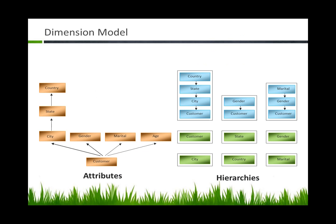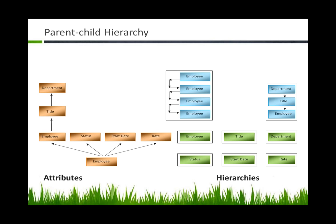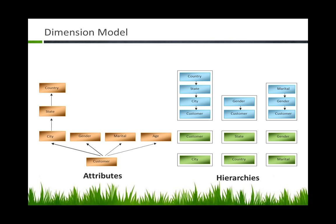Does anybody want to hazard a guess as to what the difference is between an attribute and a hierarchy? So the idea with exposing an attribute and building a hierarchy — what is the difference really between those two? An attribute about a customer is something that describes that customer. So an attribute about the customer is what city is he from, what state does that customer reside in.